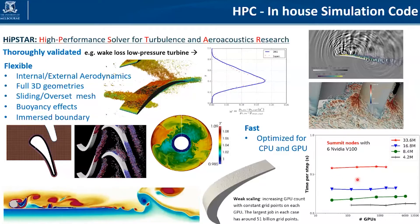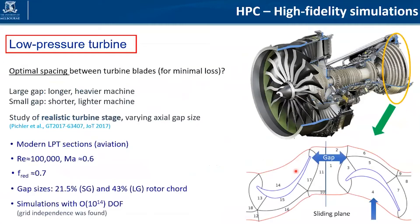I want to look at two examples of how high-fidelity simulations can directly affect the design of these engines. The first example is the low-pressure turbine. The problem I want to look at is: if you have a moving blade and a stationary blade, what should the distance be between these two blades in order to get the most efficiency out of this engine? We ran a number of calculations varying this spacing between the two blades.